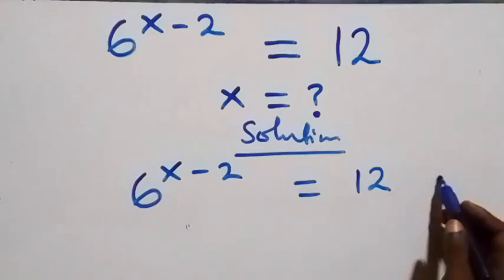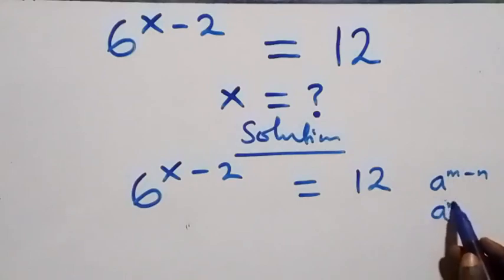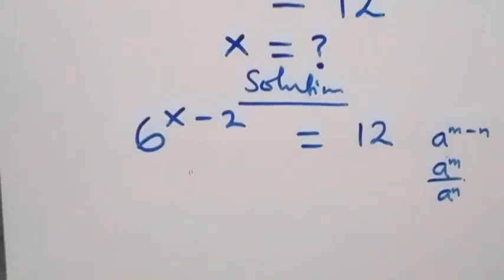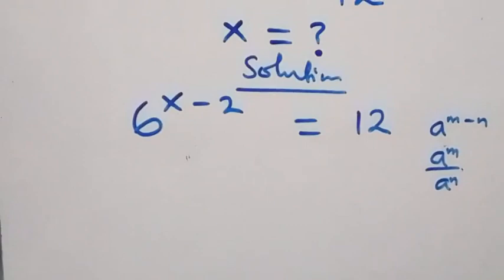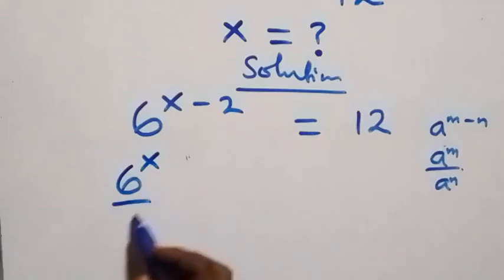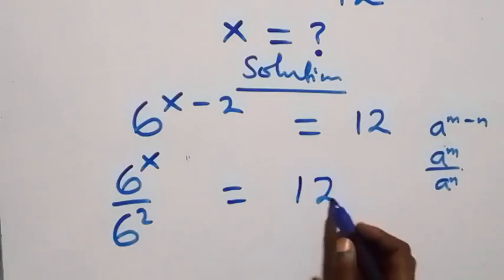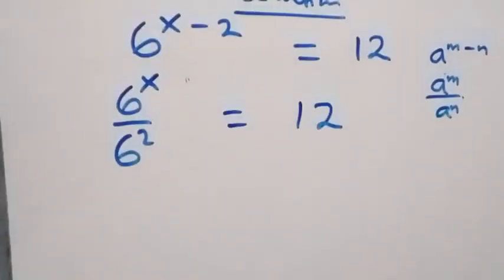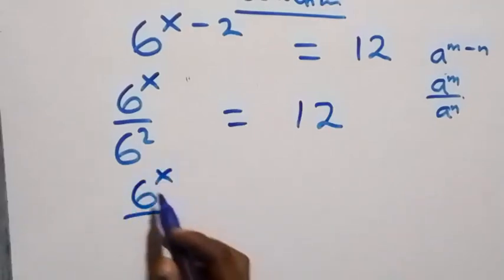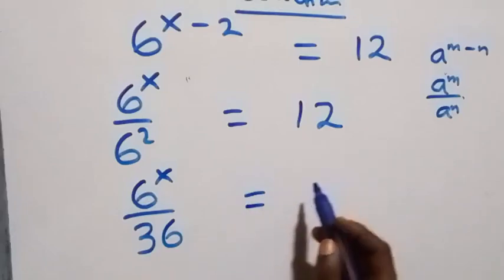This follows from the law: a raised to power n minus m equals a raised to power n over a raised to power m. So we can write this as 6 raised to power x over 6 squared, equals to 12. That is, 6 raised to power x over 36, equals to 12.